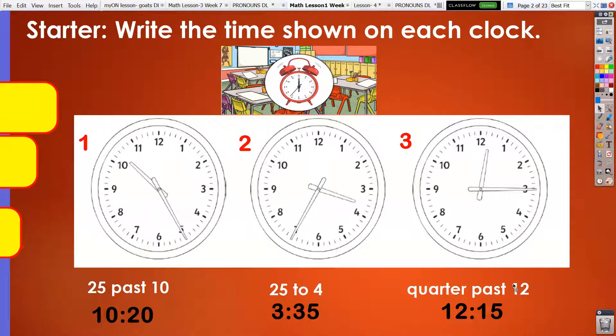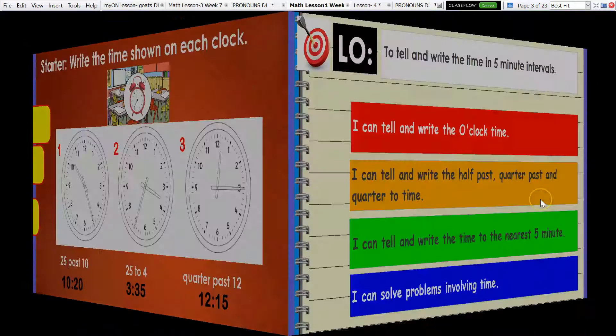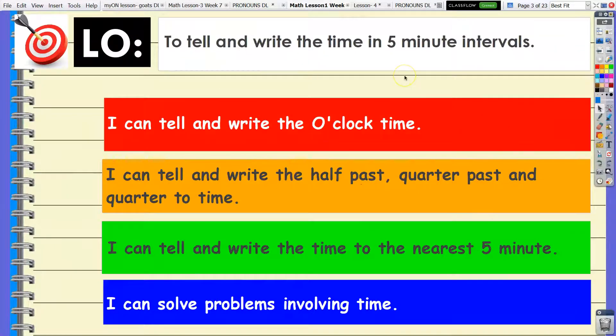If not, stay tuned and listen carefully. Learning objective, to tell and write the time in five minute intervals. Success criteria: I can tell and write the o'clock time, I can tell and write the half past, quarter past, and quarter to time, I can tell and write the time to the nearest five minutes, and I can solve problems involving time.